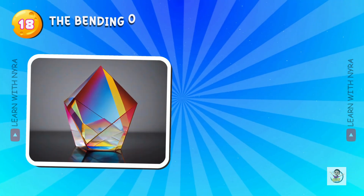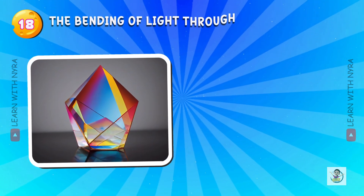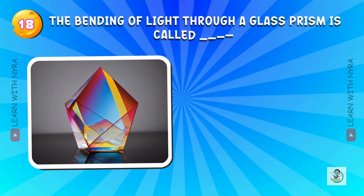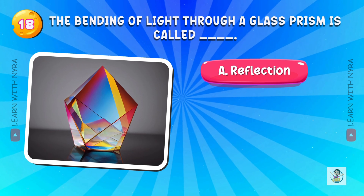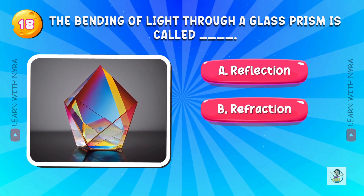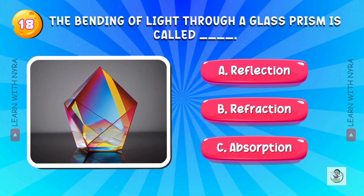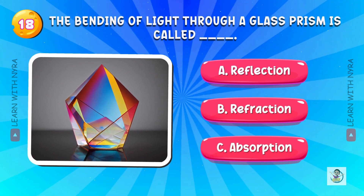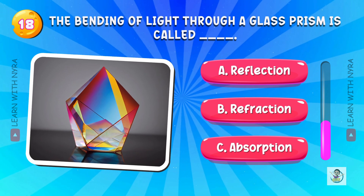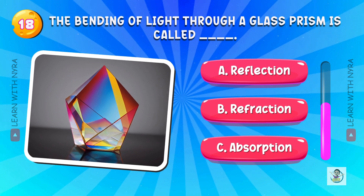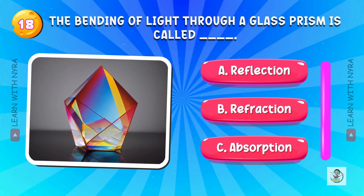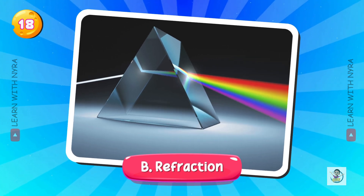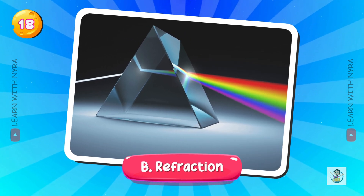The bending of light through a glass prism is called? A. Reflection, B. Refraction, C. Absorption. And the answer is B. Refraction.